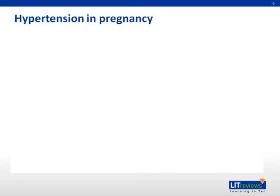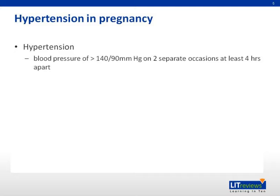In this installment, we will be focusing on the spectrum of hypertensive disorders in pregnancy, which include pregnancy-induced hypertension and preeclampsia. Hypertension is defined as a blood pressure reading of more than 140 millimeters of mercury systolic and more than 90 millimeters of mercury diastolic on two separate occasions at least four hours apart.